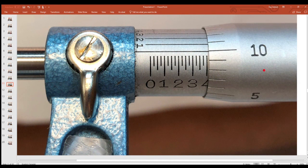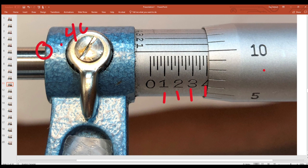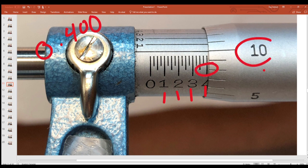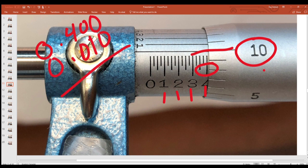Let's take a look at what we have here. Here we have 1, 2, 3, 4. 0.400. And we don't have a 25, but we do have a 10. 0.010. Therefore, 410, 410 thou.